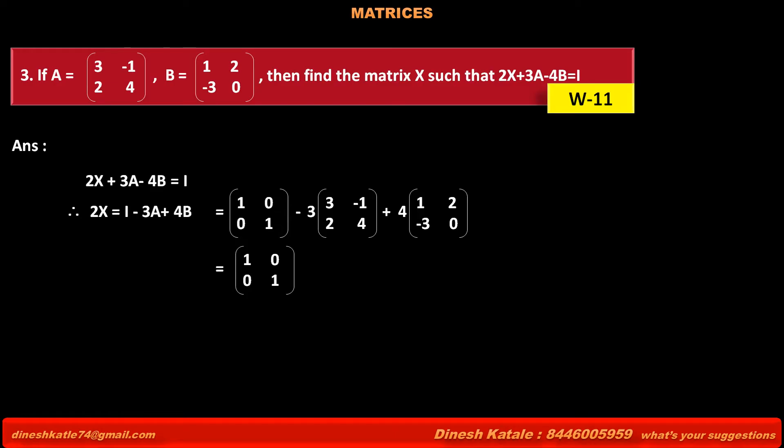This equals [1, 0; 0, 1] minus 3 times [3, -1; 2, 4] which gives [-9, 3; -6, -12], plus 4 times [1, 5; -3, 0] which gives [4, 20; -12, 0].